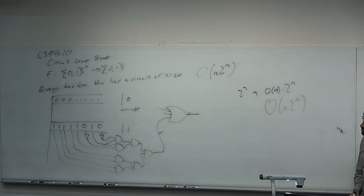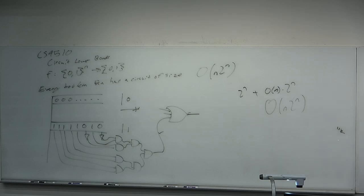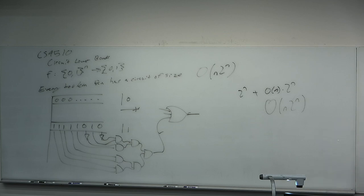Kind of a messy, ugly construction, but certainly it is a construction. We have created, given an arbitrary Boolean formula, a circuit. That's not a good construction, but it is a construction. How much better do you think we can do? What would you conjecture, given an arbitrary Boolean formula, the smallest circuit that can represent it is? 2^n? I'll tell you it's a little bit smaller than that, but only a little bit.